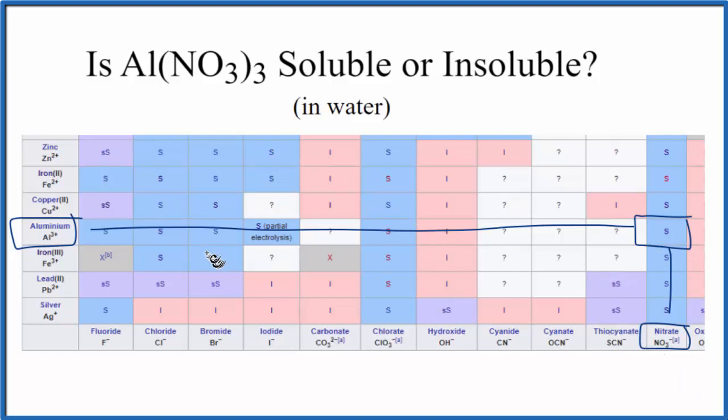So when that happens, we end up with an aqueous solution. This is dissolved in water because it's soluble. There's one last way we could check. We could actually just get some aluminum nitrate, some solid aluminum nitrate, and put it in water and see if it dissolves. Based on the chart here and our solubility rules, we would expect that it would dissolve.